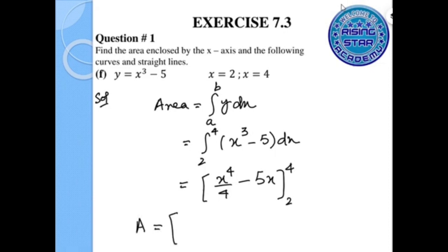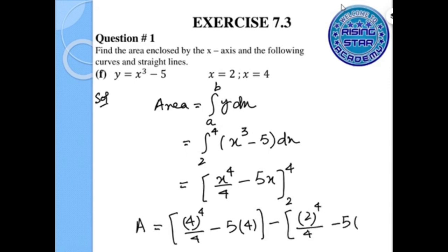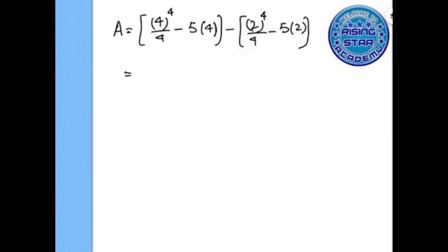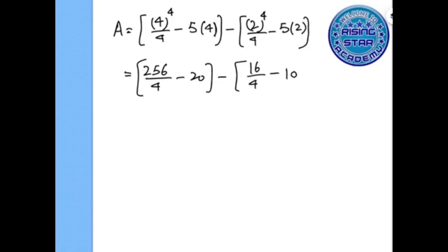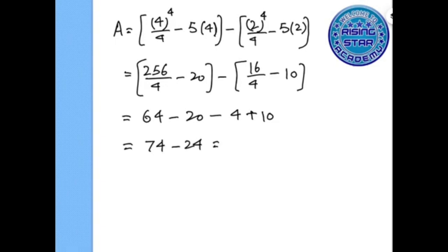Substituting the limits: 4 to the power of 4 over 4 minus 5 times 4, minus 2 to the power of 4 over 4 minus 5 times 2. Simplifying: 256 over 4 is 64, minus 20, minus 16 over 4 which is 4, plus 10. So 64 minus 20 minus 4 plus 10 gives 74 minus 24, and the answer is 50.